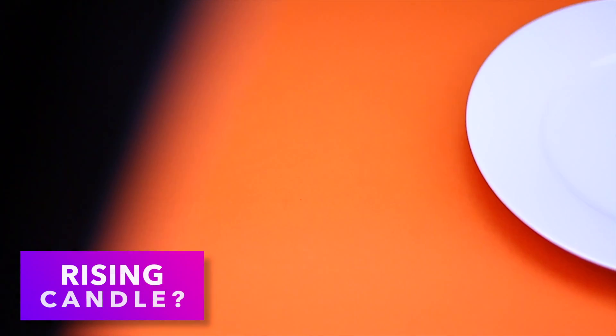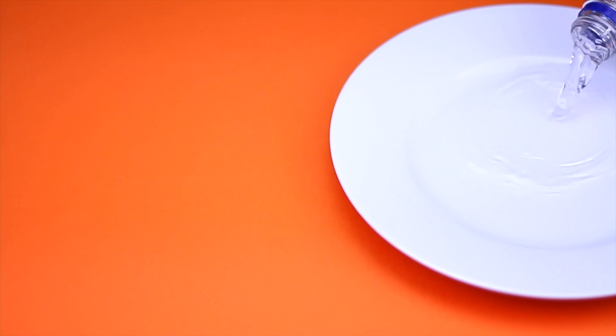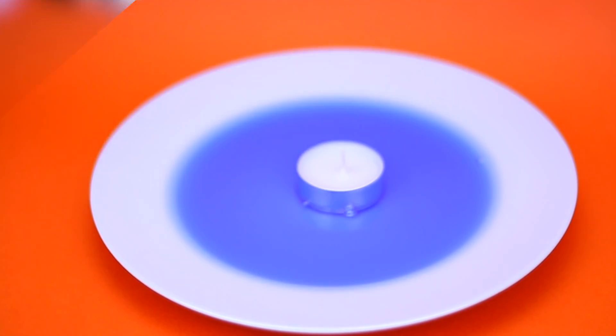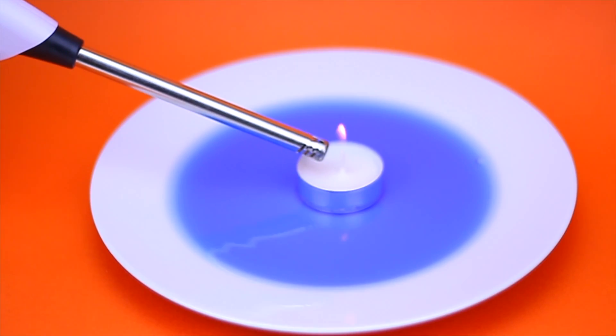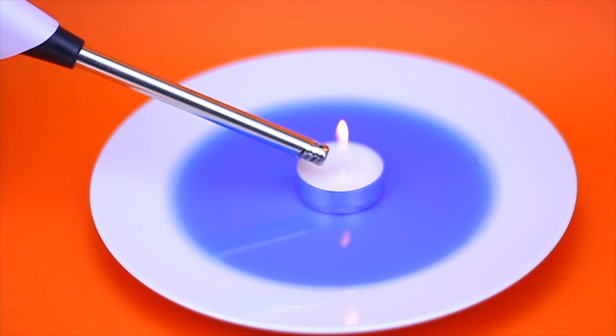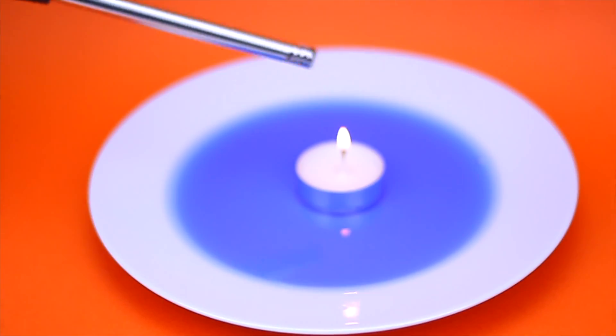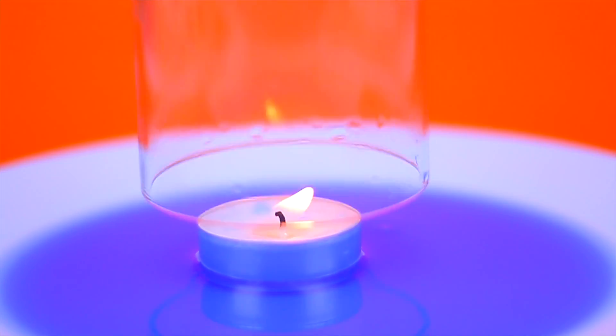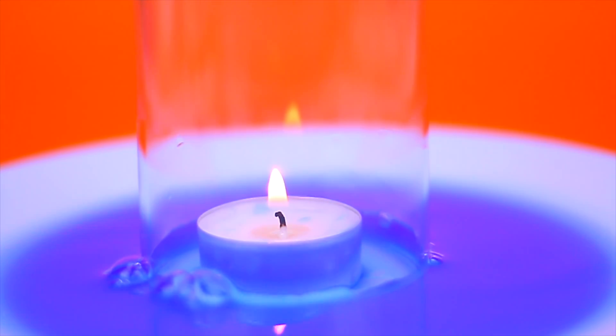Have you ever wanted a rising candle? Well here's how to do it. Pour some water onto a plate and add some food coloring to the water. This is optional. Add your candle into the center and light it. Place a cup over the candle and watch it rise.